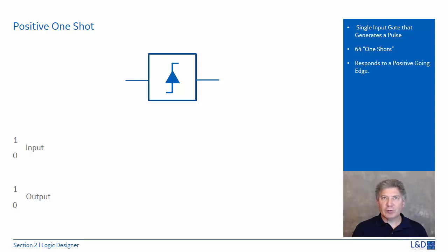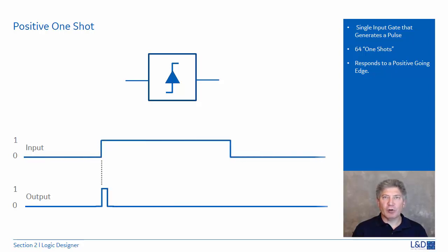The graph shows the relationship between the input and the output of a one-shot. On the positive transition of the input, a short-duration pulse is generated on the output.